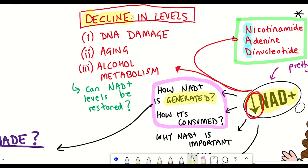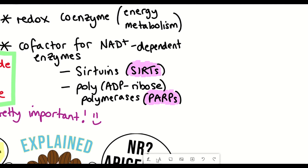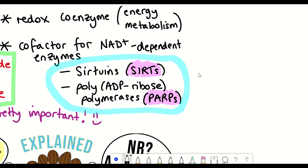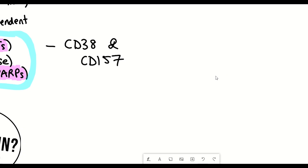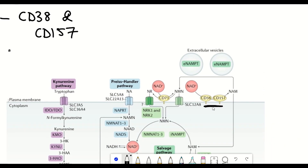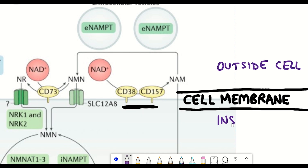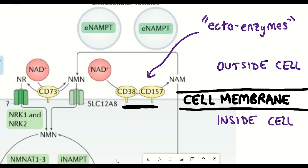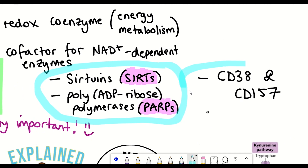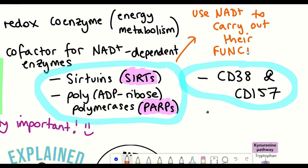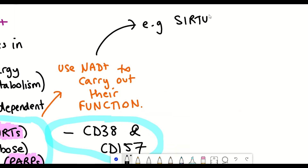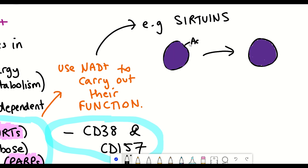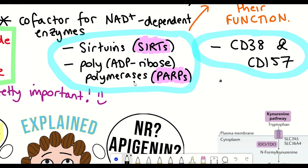But first, we need to understand why NAD+ levels decline. I've already mentioned two NAD+-consuming enzymes — sirtuins and PARPs — but NAD+ can also be consumed by two enzymes: CD38 and CD157, which are found at the cellular membrane. They're called ecto-enzymes because they have activity outside of the cell. Whilst NAD+ consumption may seem bad, these enzymes require NAD+ to carry out important functions. Sirtuins deacetylate different proteins, activating stress resistance pathways like autophagy, while PARPs use NAD+ to help repair DNA damage.